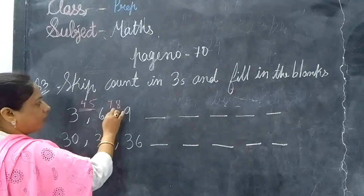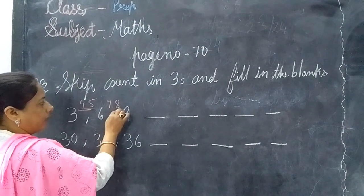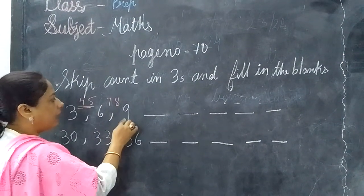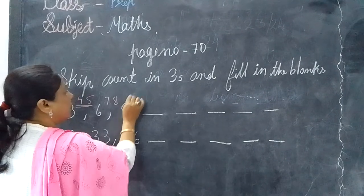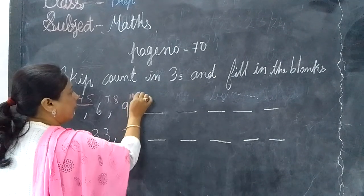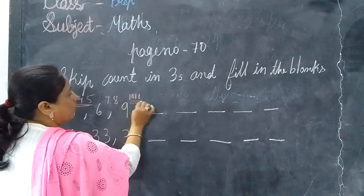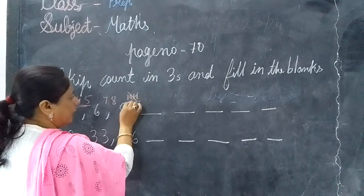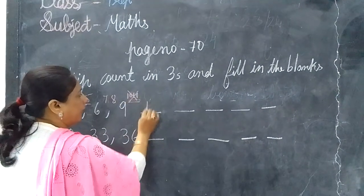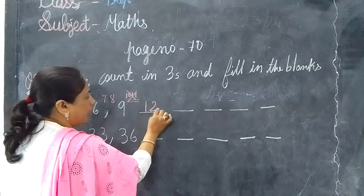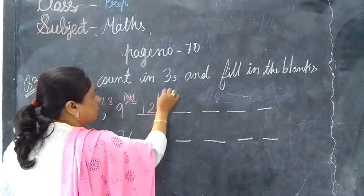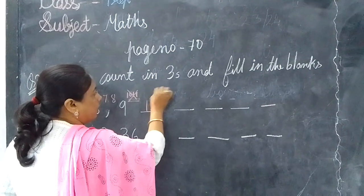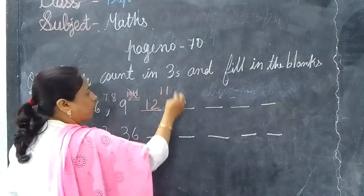Let me know how to write. This number is written: 9, 10, 11. This number is written: 12, 20, 30, 40.